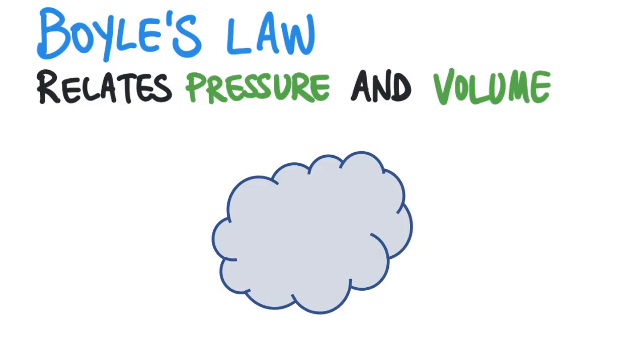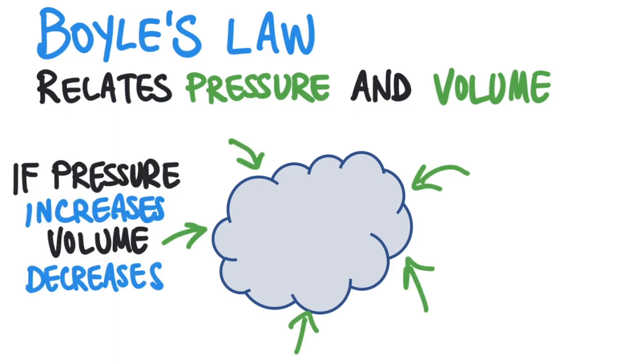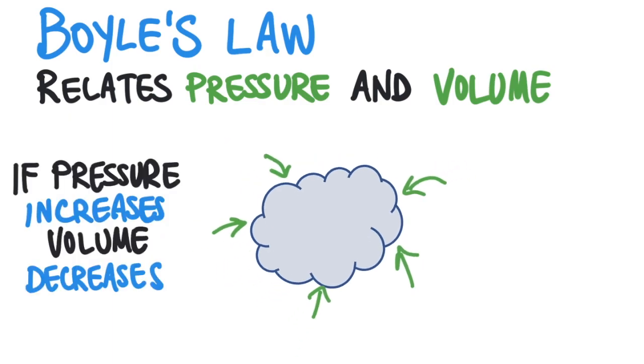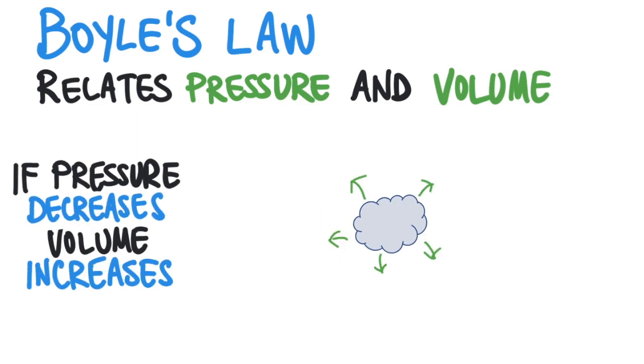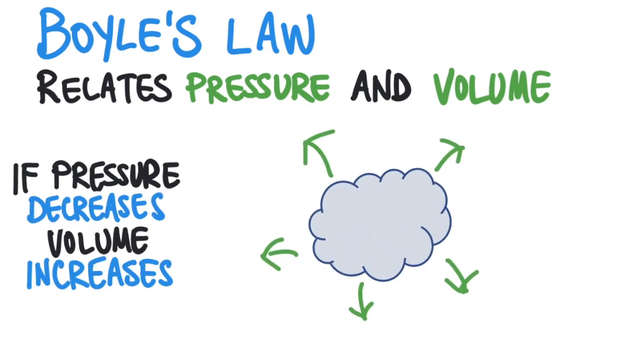Boyle's Law describes the relationship between the pressure and volume of a gas when temperature is held constant. Using words, Boyle's Law can be described like this: If the pressure of a gas increases, the volume of the gas will decrease. Or we can say it the other way. If the pressure of a gas decreases, the volume of the gas will increase.